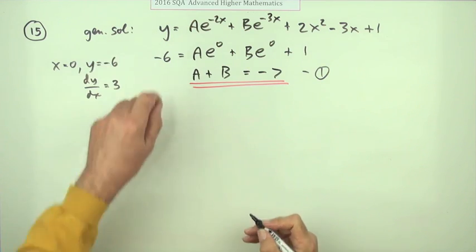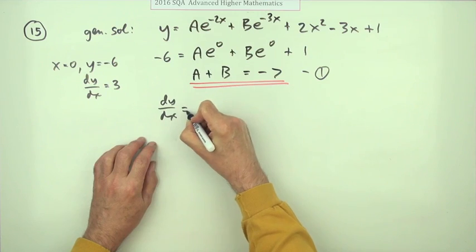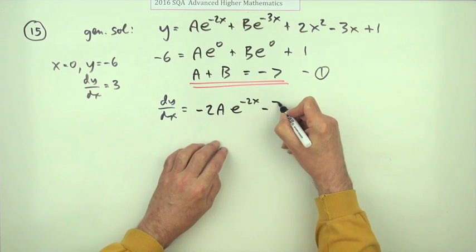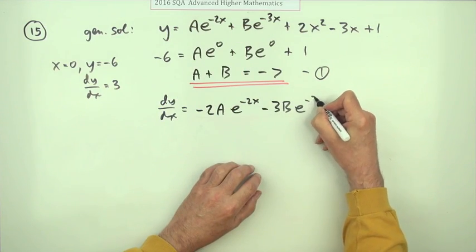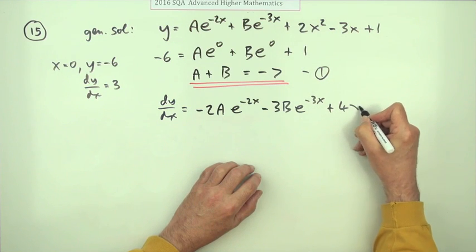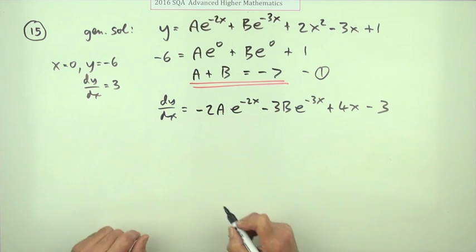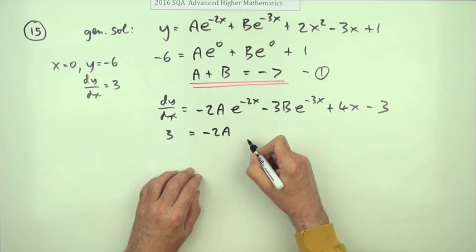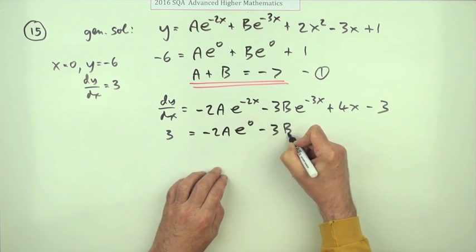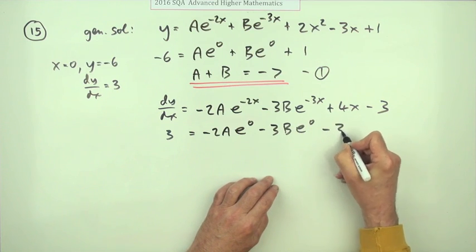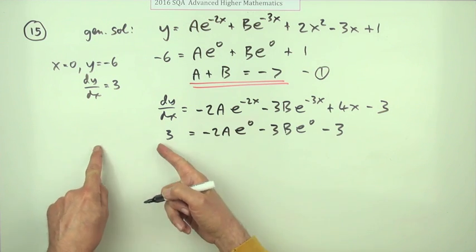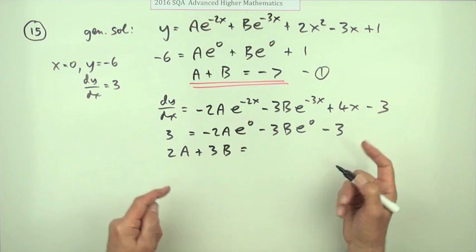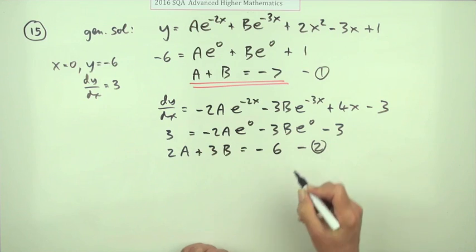In order to use this one, I'll have to differentiate it. dy by dx will be negative 2a lots of e to the negative 2x minus 3b e to the negative 3x plus 4x minus 3. Now I'll use this initial condition. The derivative is 3 when x is 0. So that's negative 2a e to the 0 minus 3b e to the 0 minus 3. I think this time I'll take them over this side and say that becomes 2a plus 3b, and taking that 3 across equals negative 6.